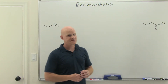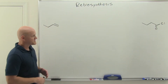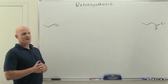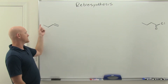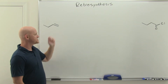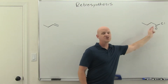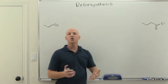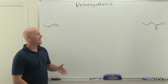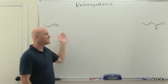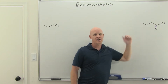So for retrosynthesis, the first thing you want to do is match up your carbon skeleton. Here we've got a four-carbon chain, and here we've also got a four-carbon chain, so we're not adding or removing any carbons. I start out with an alkene and I end up with an acid chloride.